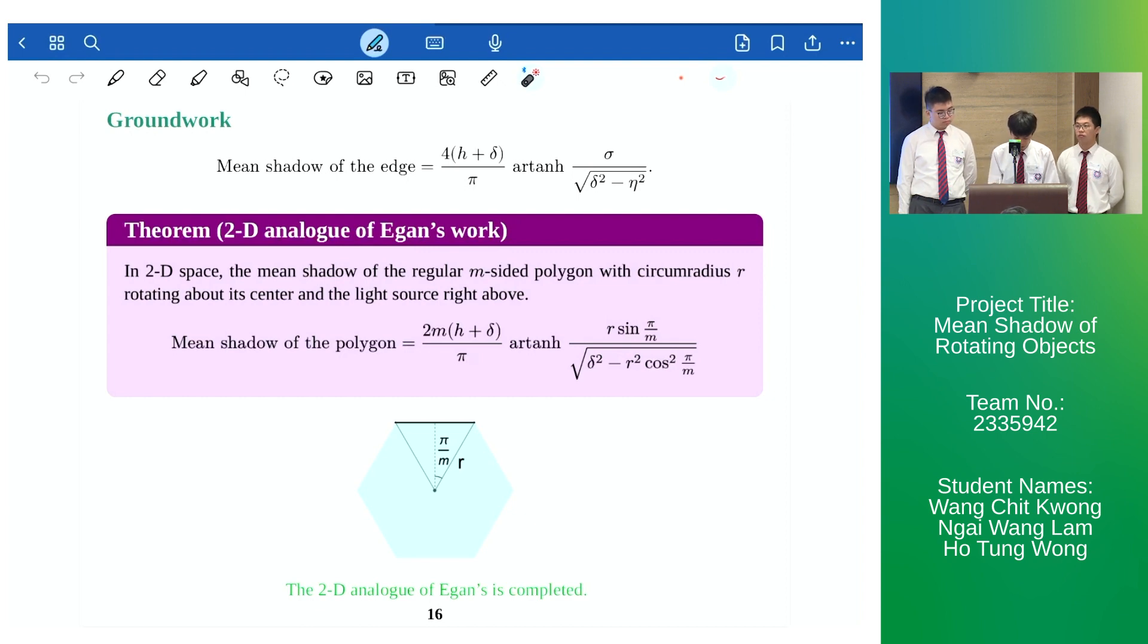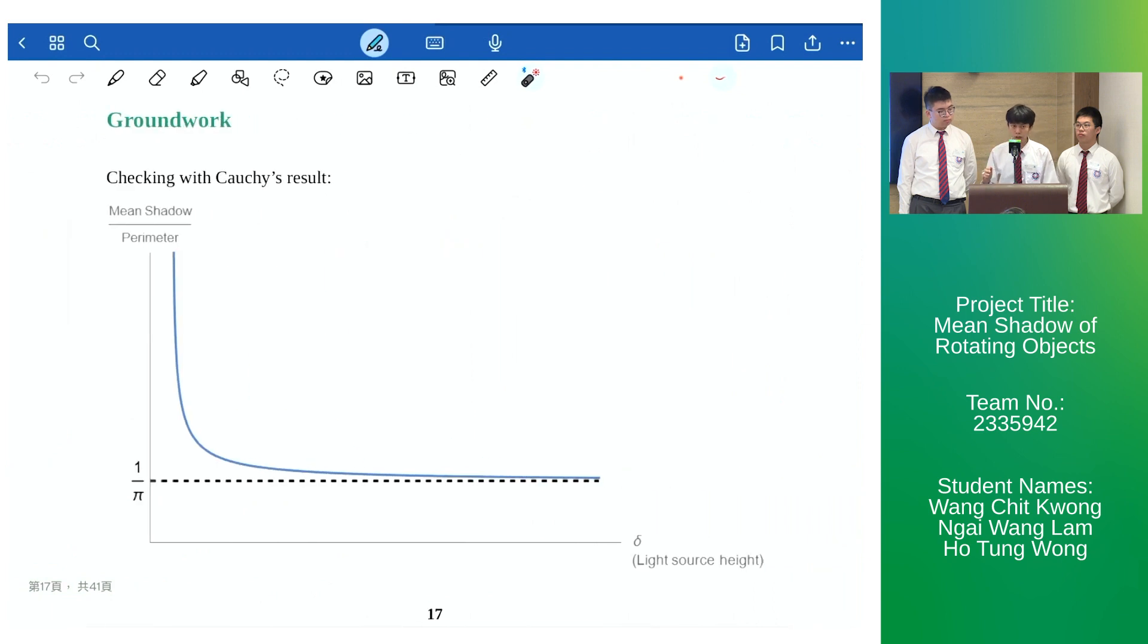That is, we derive a formula for the mean shadow of a regular m-sided polygon with circumradius r. We conduct numerical verification and find that the mean shadow over perimeter converges to 1 over pi as the light source height delta tends to infinity which matches Cauchy's results.